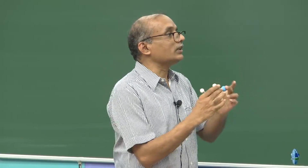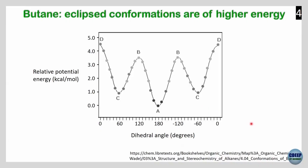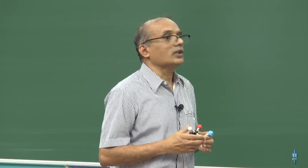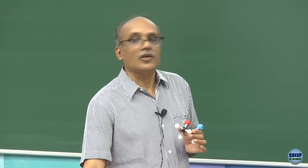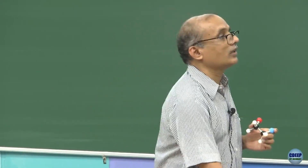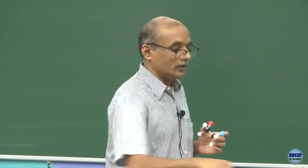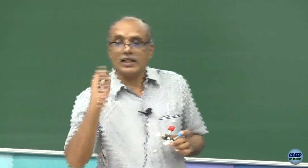Which conformations are stable out of A, B, C, D? A is more stable. Conformations B and D are not stable. A is more stable, and C will also be a stable staggered conformation. Are you clear which ones are stable? B and D are high energy — why does that happen? I will tell you about Van der Waals interaction.